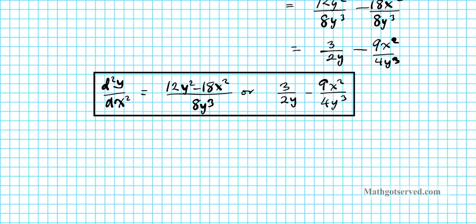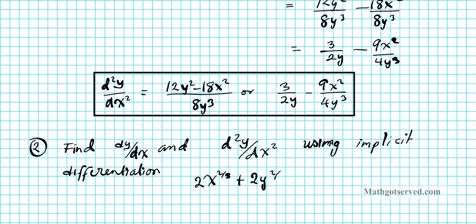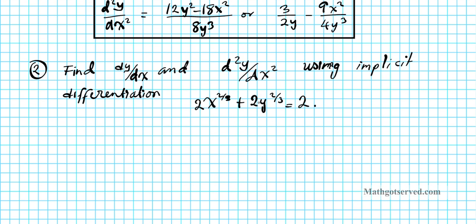To check your understanding, try example 2: use implicit differentiation to find dy/dx and d²y/dx² for the function 2x^(2/3) + 2y^(2/3) = 2. Find the first and second derivatives and verify the accuracy of your solution with the calculator. Please post your answer in the comment section, along with any questions or issues you encountered.